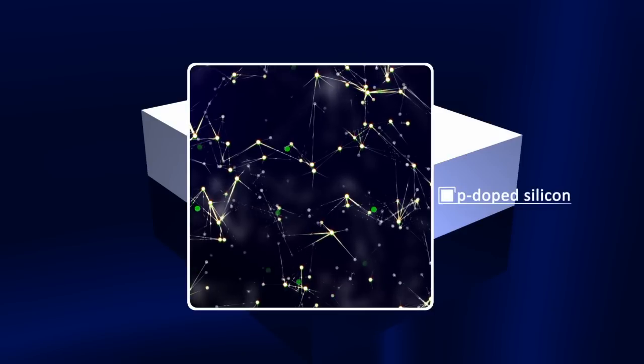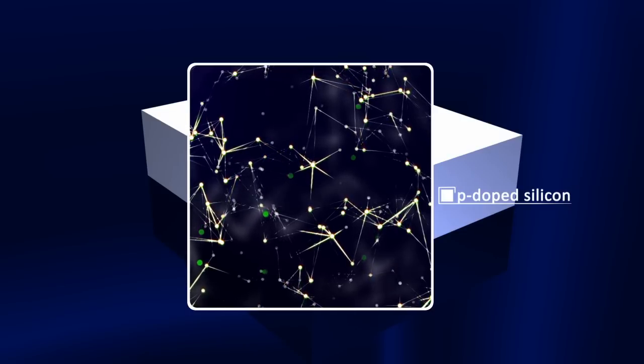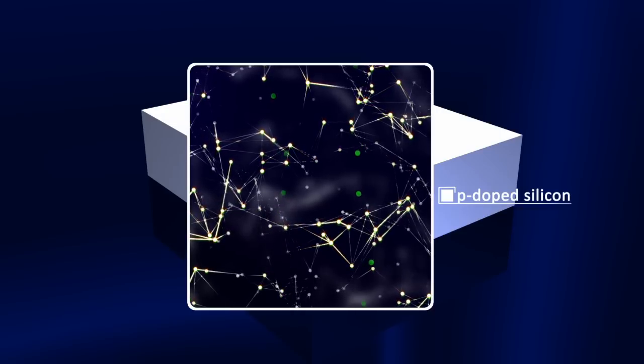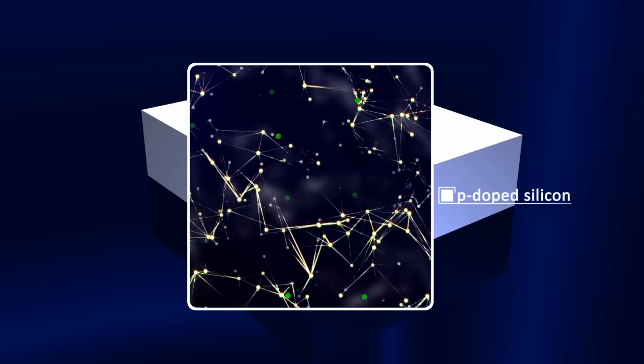In this example, the substrate is composed of P-type doped silicon. On this substrate, there are electrons, shown here in white, as well as holes, known as electron holes, shown here in green.